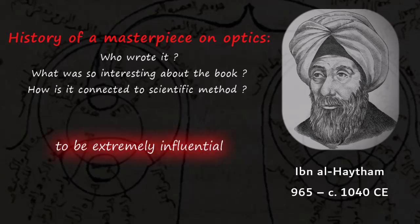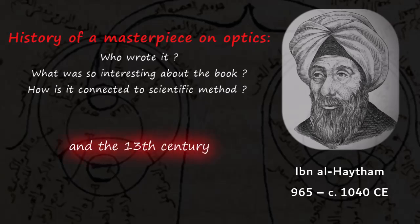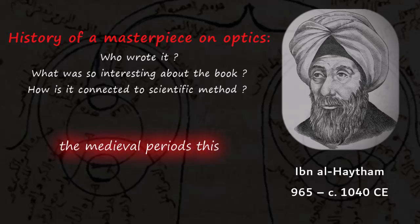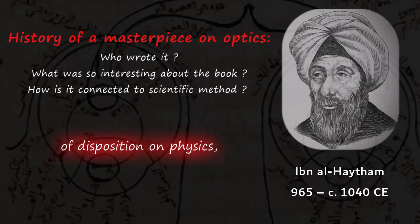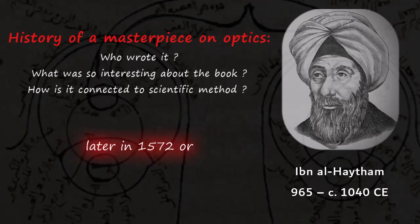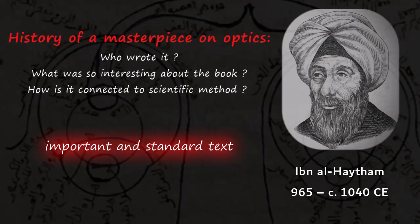This book turned out to be extremely influential, so much so that it got translated into Latin in the 12th and 13th centuries, and it enjoyed great reputation. It is considered one of the greatest works, and even in the medieval period this work was considered an important piece of exposition on physics and scientific method. It was also printed later in 1572, distributed across Europe, and became a very important and standard text related to optics.